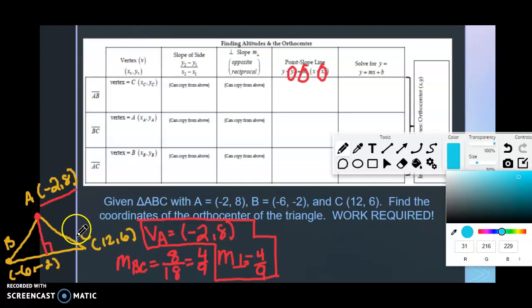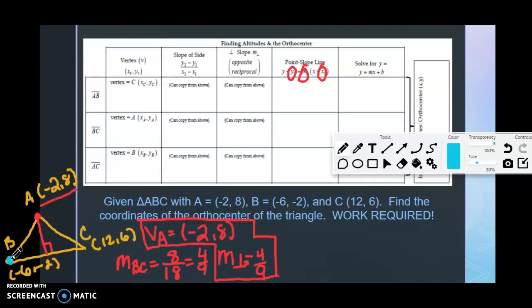We're going to start at vertex B and go to the opposite side, so I'm just going to call that VB so we know that we're starting at vertex B. The point that we're going to use there is (-6, -2). Now we need to find the slope of this, but first we need to find the slope of AC.